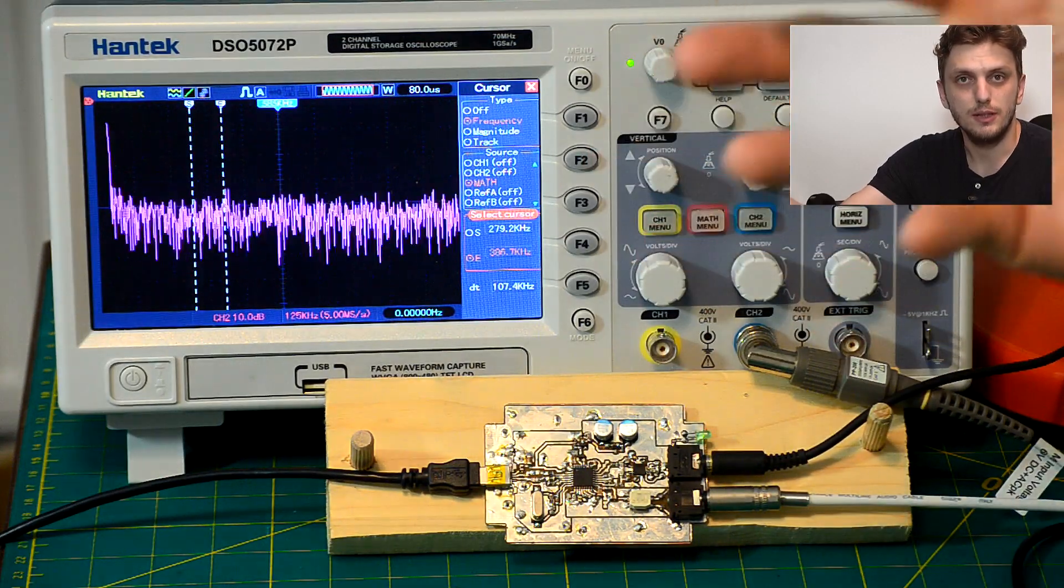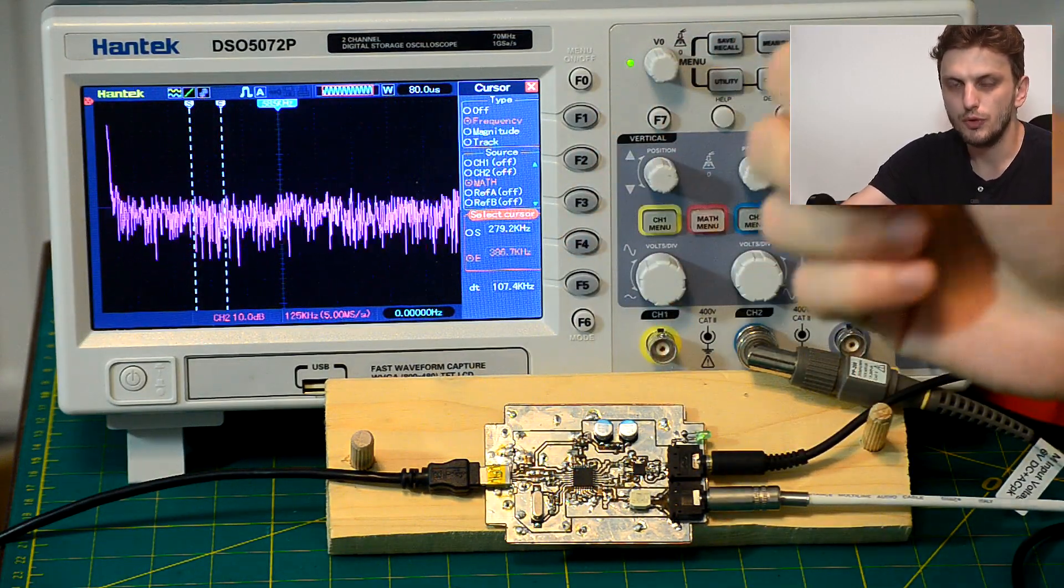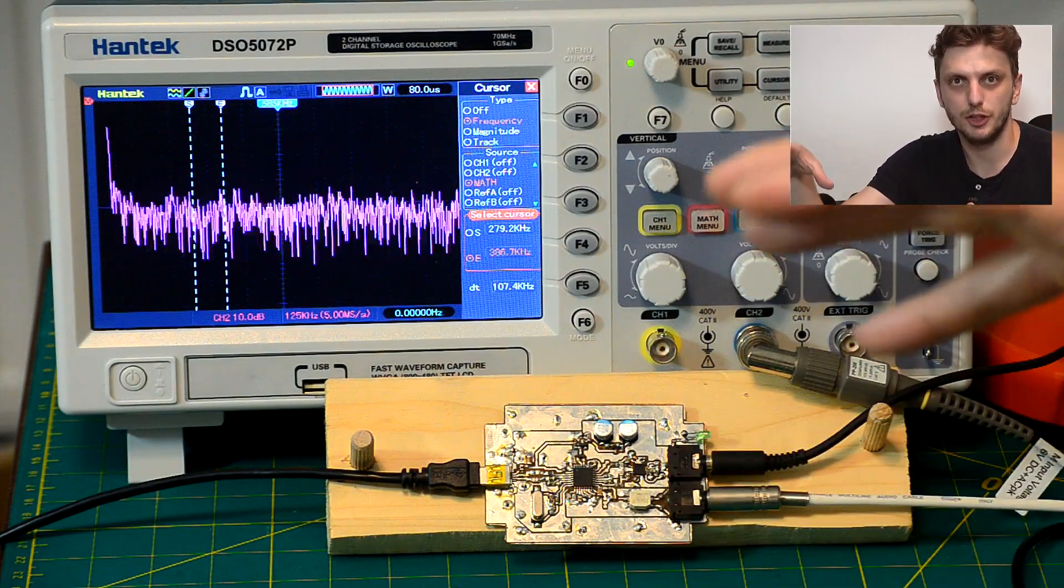when you don't really know exactly what you're looking for or where exactly it is on the board, you're going to be using a large probe tip. So something that can cover a large area.